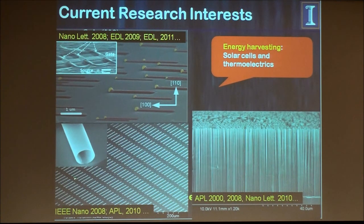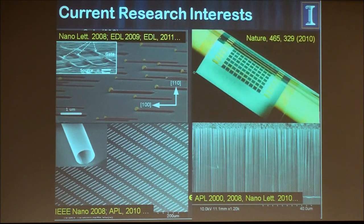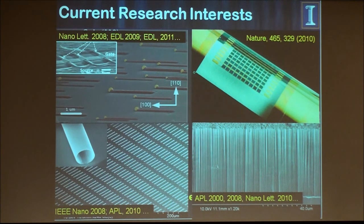These are III-V compound semiconductor materials that wrap around into a tube because of the strain. We also wrap dielectric and metal in such a configuration. We do not only horizontal wires but also vertical wires and thin membranes. For energy applications, this is a flexible single-junction gallium arsenide solar cell on plastics.